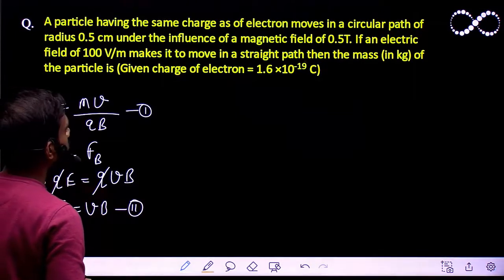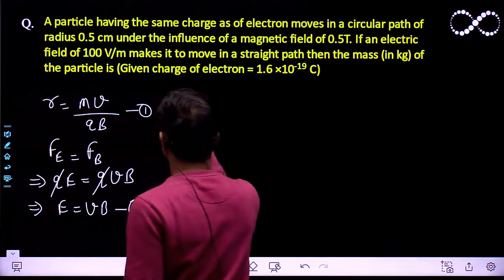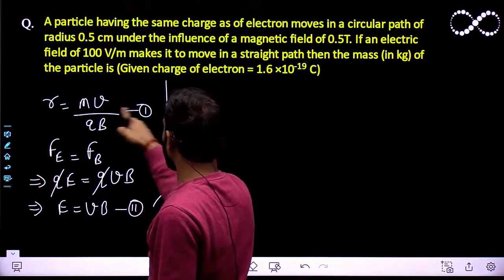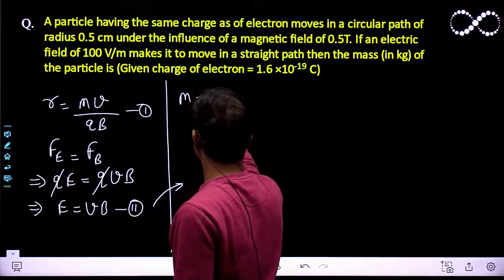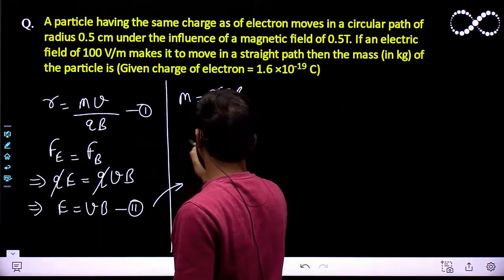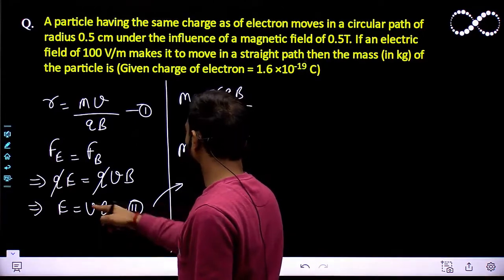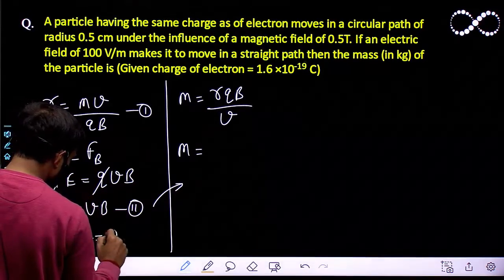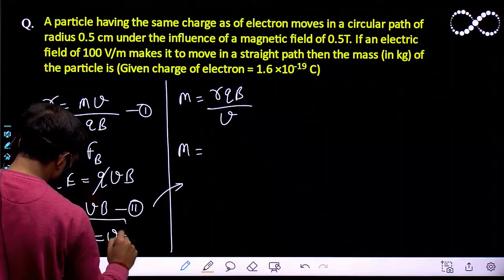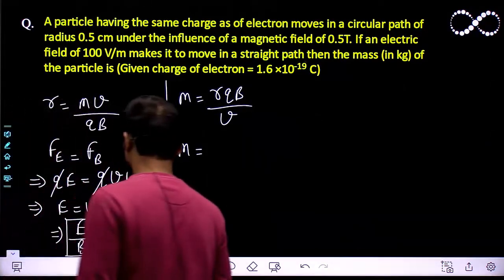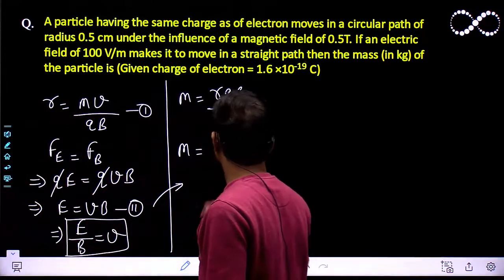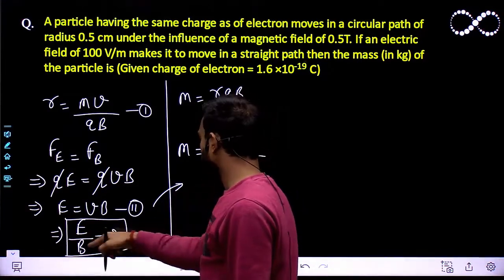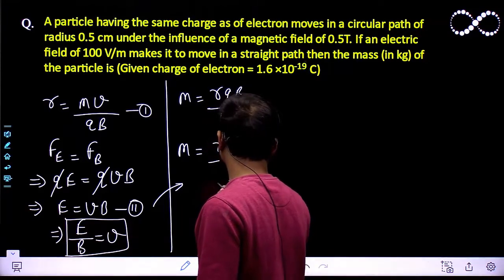I need to find the mass of the particle. Using equation 1, m is equal to rqB upon v. Substituting v from equation 2, where v equals E upon B, I get m is equal to rqB upon v, which becomes rqB squared upon E.